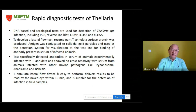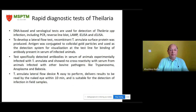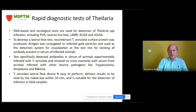These include PCR, reverse line blot, LAMP, indirect ELISA, competitive ELISA, etc. To develop a lateral flow test, recombinant Theileria annulata surface protein was produced; the antigen was conjugated to colloidal gold particles and used as the detection system for visualization at the test line for binding of antibody present in serum of infected animals. The test specifically detected antibodies in experimentally infected animals and showed no cross-reactivity with serum from animals infected with other bovine pathogens like Trypanosoma, Anaplasma, or Babesia.